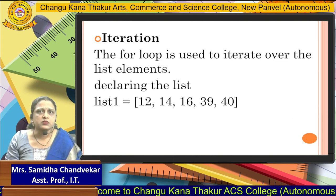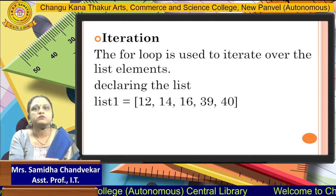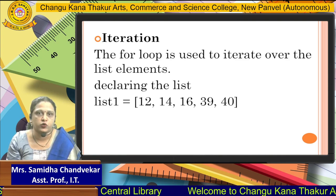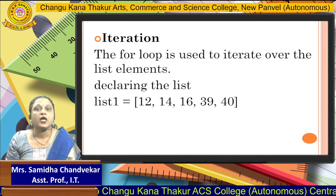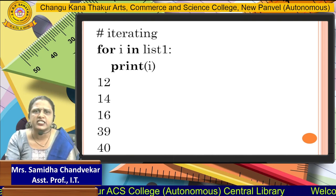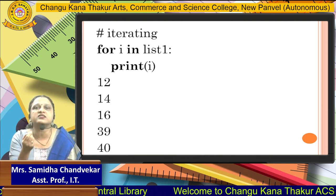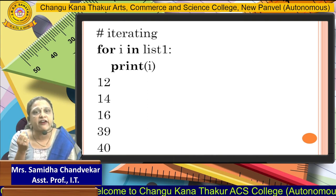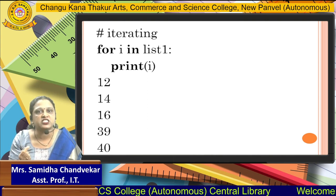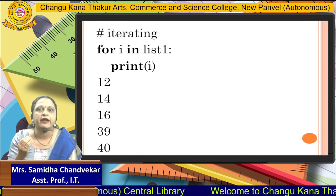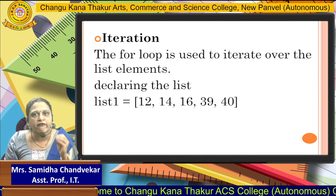Next is iteration. What is meant by iteration? Iteration means we are visiting every element of the list. For iteration, we use the for loop. When you declare list1 = [12, 14, 16, 39, 40], for iteration we write: for i in list1: print i. Here i is the variable used for the index. That means from list1, every index value — 12, 14, 16, 39, 40 — will be visited and printed. So that is nothing but iterating. Iteration means visiting every element from the list.